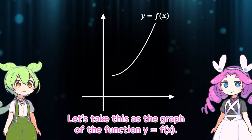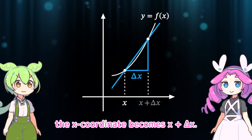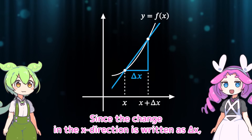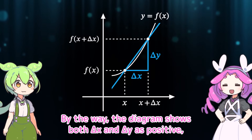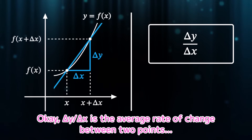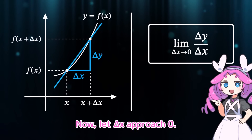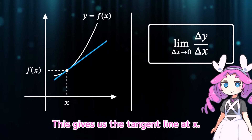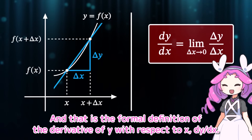Let's take this as the graph of the function y equals f of x, and fix x. Now, if we move delta x away from x, the x coordinate becomes x plus delta x. Since the change in the x direction is written as delta x, we'll denote the change in the y direction as delta y. Delta y over delta x is the average rate of change between two points — or in other words, the slope of the line connecting the two points. Now, let delta x approach zero. This gives us the tangent line at x. Since delta y over delta x is the slope of the line connecting two points, if the limit exists, it represents the slope of the tangent line at x. And that is the formal definition of the derivative of y with respect to x, dy by dx.